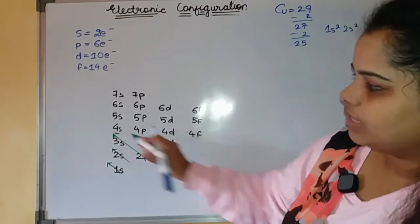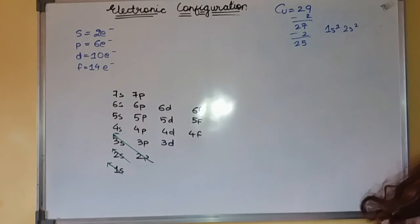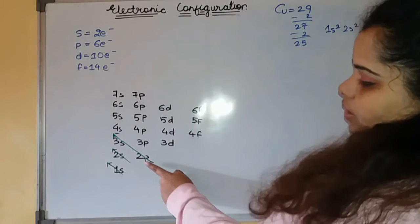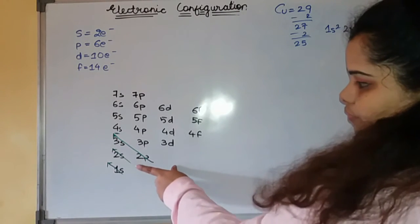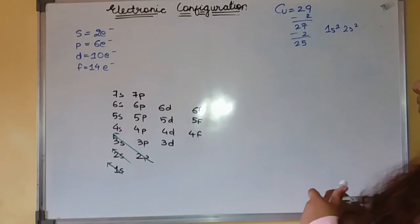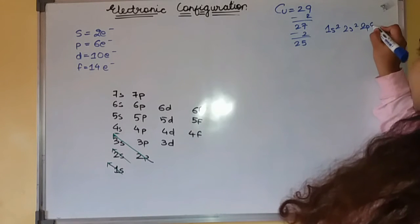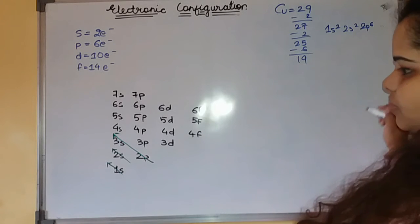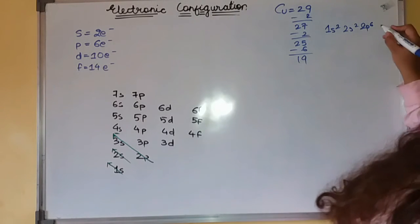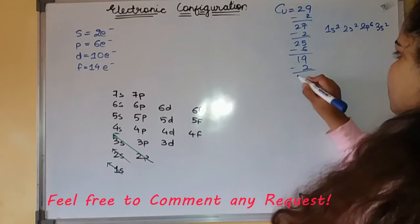Then 2s we have to fill. Subtract 2. Then 2p and 3s. Remember, this arrow's direction will show you how you have to carry out or write down the electronic configuration from tail to the head. Write down 2p⁶ and subtract 6. Then 3s². Subtract 2.